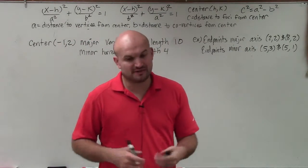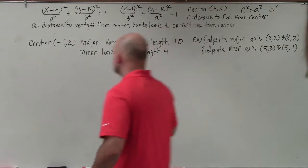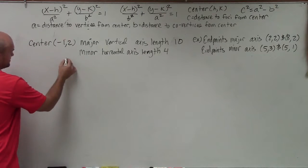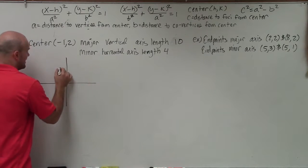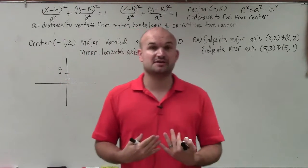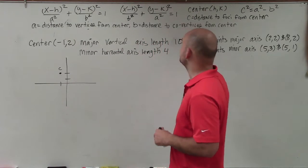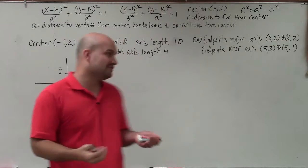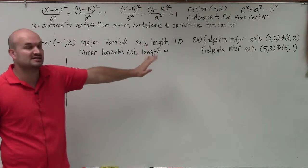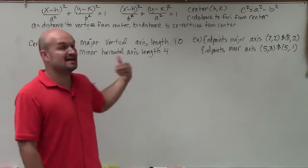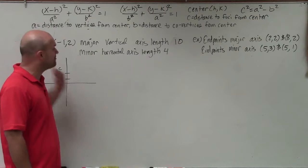When writing the equation of an ellipse and you're given some piece of information, the most important thing is to plot the information that is given. The center is at negative 1, positive 2, so I'm going to plot that and label it as the center. To write the equation of the ellipse, we need to identify a squared and b squared. They tell us the length of the major axis as well as the length of the minor axis, and whether the major axis is vertical or horizontal.